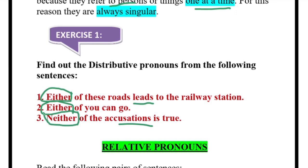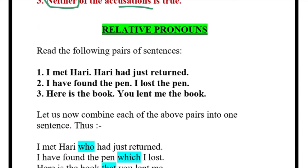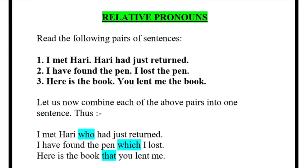Now two more pronouns and then you are done with pronouns. Next: relative pronouns. When you can relate between two or more things, relative pronouns can be words which you use as conjunctions to join two sentences. You will have to see what is common in these two sentences: 'I met Harry' and 'Harry had just returned.' What is common? Harry — this thing is common in both sentences.